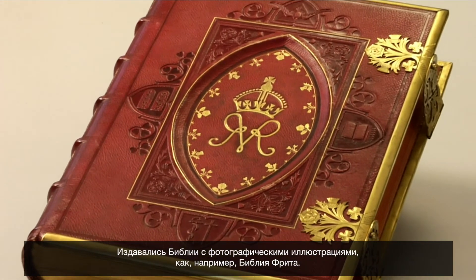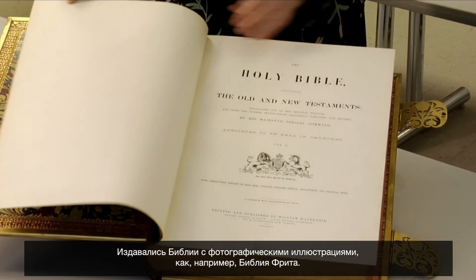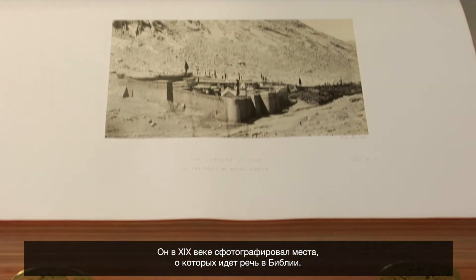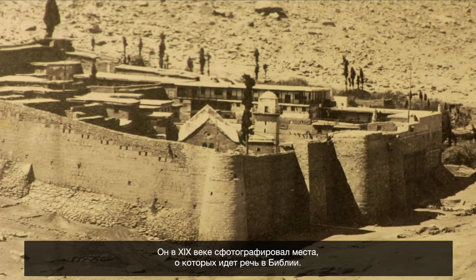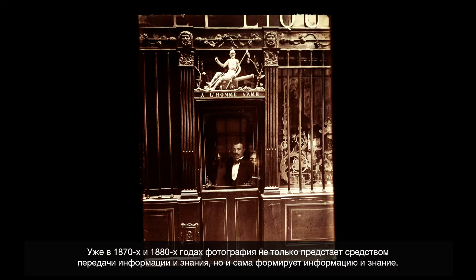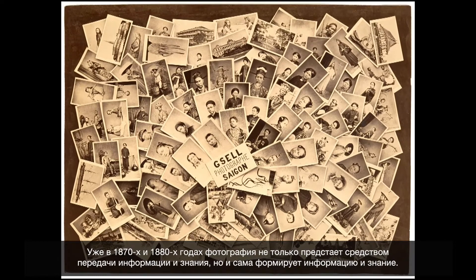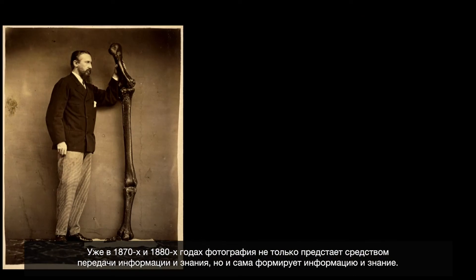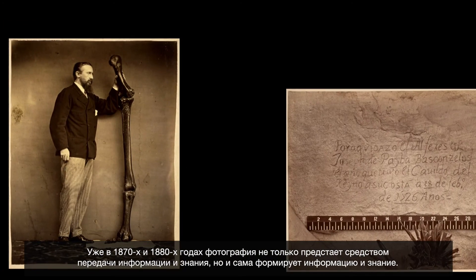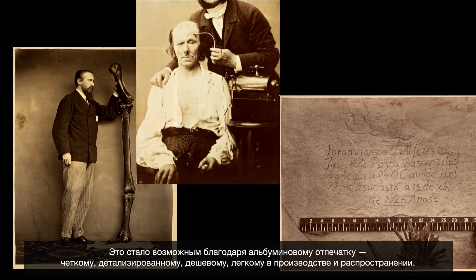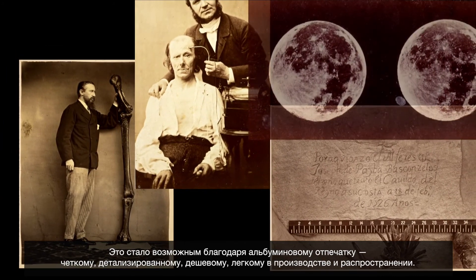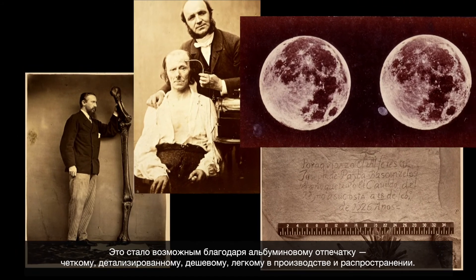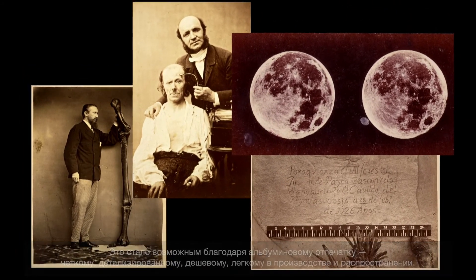People like Frith produced photographically illustrated Bibles, where he photographed the sites in the 19th century where things told about in the Bible were said to have happened. We begin to see how, as early as the 1870s and 80s, the photograph becomes a really important not just conveyor of knowledge and information but a shaper of knowledge and information. And it's the albumin print that made that possible because it was precise, it was detailed, it was cheap, and it could be mass produced and distributed easily.